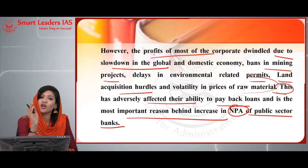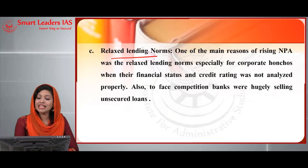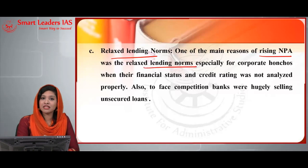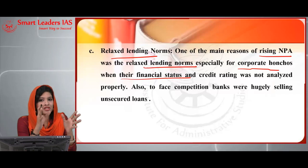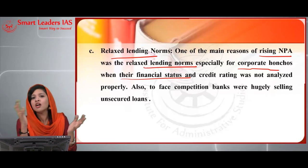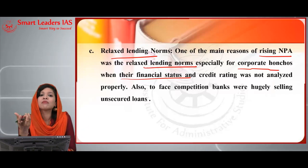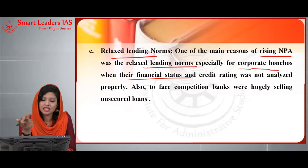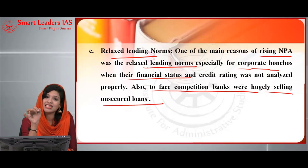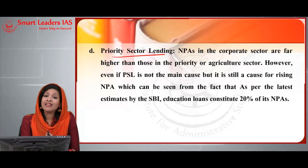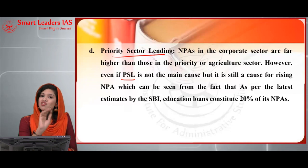Another important reason is relaxed lending norms. The financial status and credit rating of corporates were not analyzed properly; banks lent in a very relaxed way without assessing real creditworthiness, leading to inability to repay and creation of NPA. To face competition, banks were also selling unsecured loans heavily. Priority sector lending, while not a major cause, has also contributed — for instance, educational loans constituted 20% of SBI's NPAs.